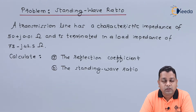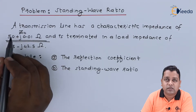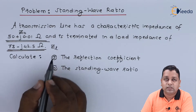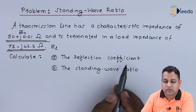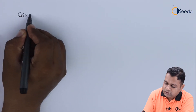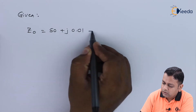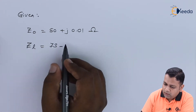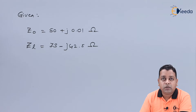The characteristic impedance is represented as Z₀, and the load impedance is represented as Z_L. We shall note down these two given values: Z₀ equals 50 plus j times 0.01 ohms, and Z_L equals 73 minus j times 42.5 ohms. Now we require the determination of the reflection coefficient.